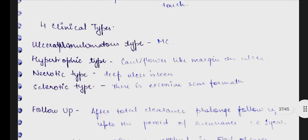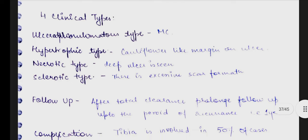Now we are going to look at the clinical types. There are four types of donovanosis ulcers. The first one is the ulcerative granulomatous type, which is the most commonly seen. Here there is ulcer formation as we have already explained.